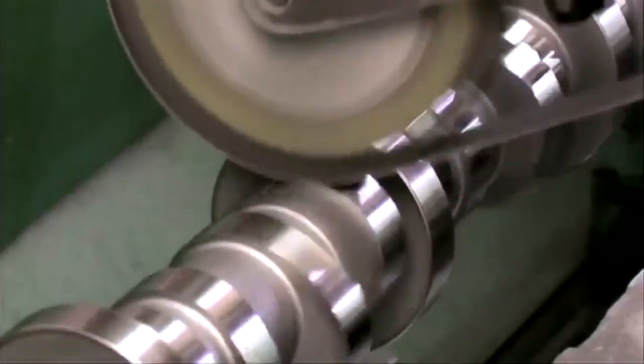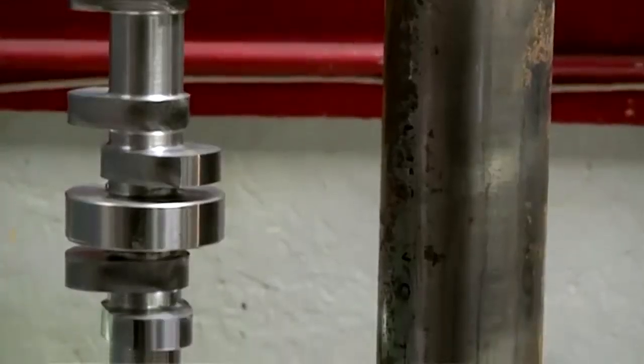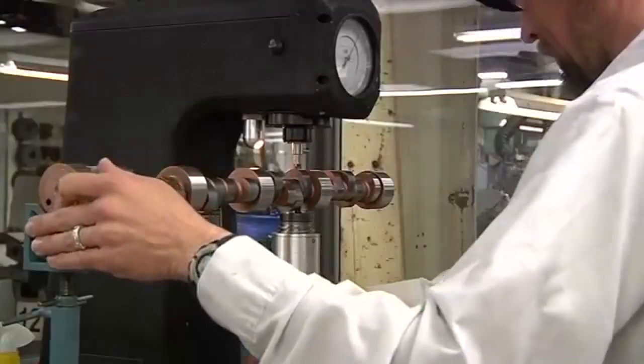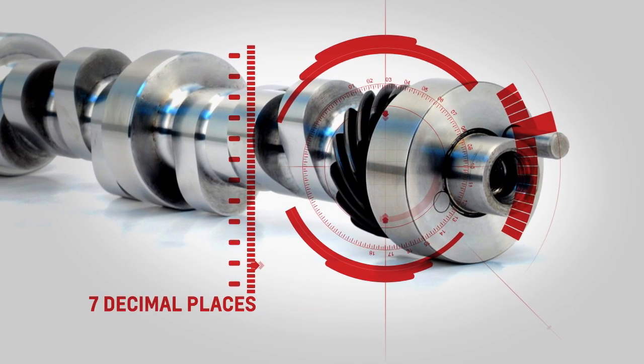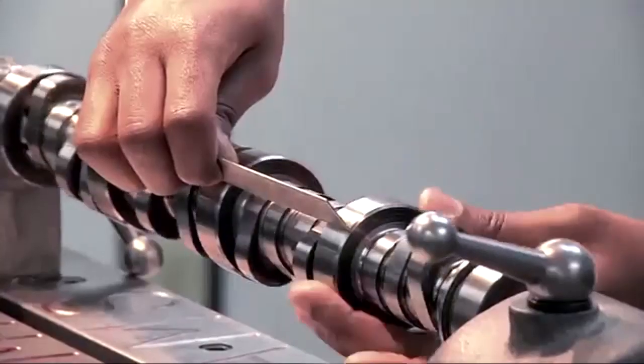Rather than old school cast core machining, these precision hydraulic roller camshafts are 100% CNC machined from induction hardened steel billet cores, including press-on cast distributor gears, with accuracy to seven decimal places.